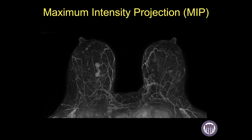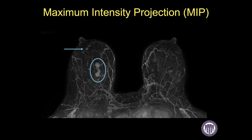Maximum intensity projection images help us better understand the relationship of multiple lesions. In this case, we see multiple masses in the central breast representing the patient's known breast cancer, but there is also a small mass in the anterior breast that was subsequently biopsied and shown to be another area of invasive cancer. Our surgeons find MIP images particularly helpful for understanding the orientation and relationships of multiple lesions within the breast.